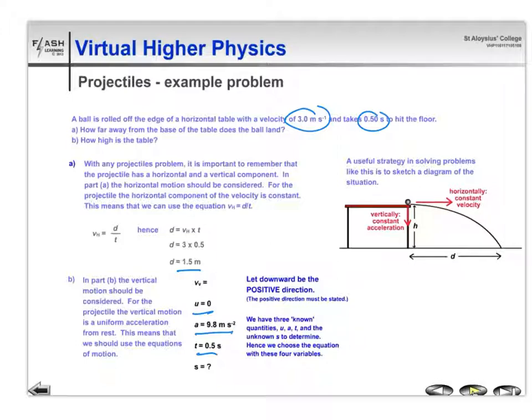I will generally write that as minus 9.8, just to remind you that it's downwards. In this question, they've taken downwards to be positive, but I think it's easier just to be consistent.